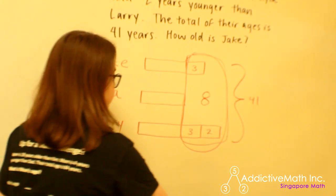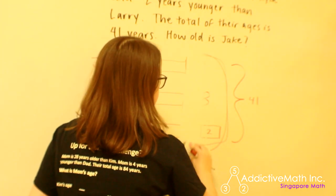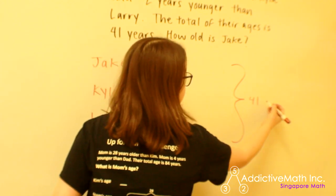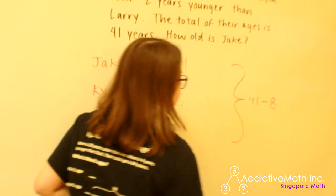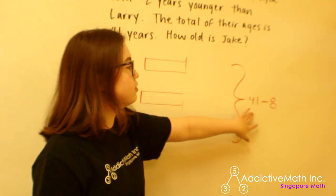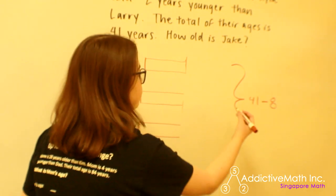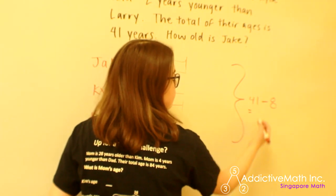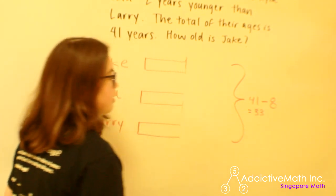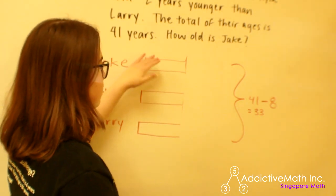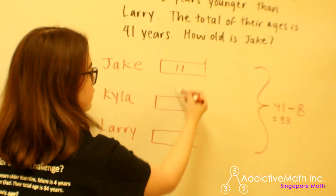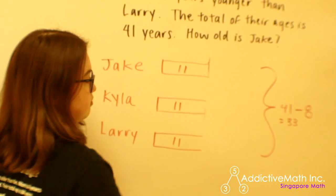I'm actually going to get rid of that. When I remove this eight, I need to also subtract it from our total over here. So now I have a new statement: three of whatever this quantity is, is equal to 41 minus eight. Let's simplify — 41 minus eight gives us 33. Three of these bars is equal to 33, so each individual one, since they're all the same size, is 11. That's 33 divided by three.